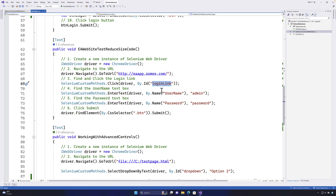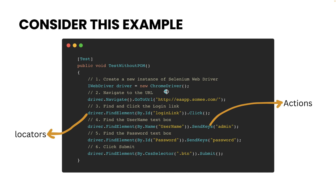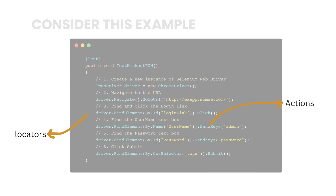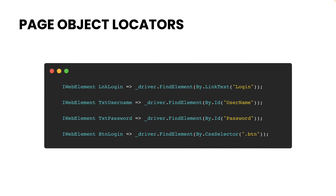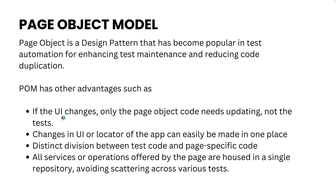If tomorrow this particular identifier changes, you have to go back and change all these tests as well. We can easily avoid this by writing all the locators and operations in a separate class file, like a page object class file. If you change in one place — the page object model code class file — then your whole code will change automatically.